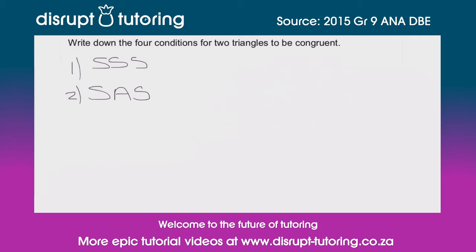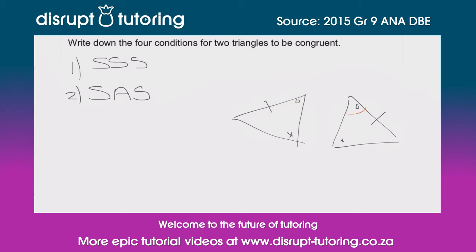For the next one, I'm going to draw two separate triangles and mark one side on each. We notice that we've got a side that is the same size, and those two angles are the same, and those two angles are the same. In this instance, these two triangles are congruent because of a side and two angles being the same, so our reasoning is Angle-Angle-Side (AAS). That is our third condition.